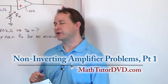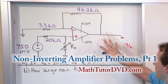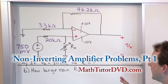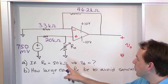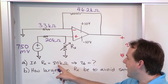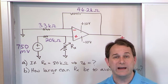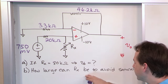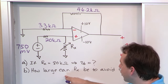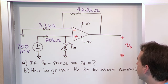Hello, welcome back to this lesson in engineering circuit analysis. We're talking about op amps, specifically non-inverting op amps. This is our first non-inverting op amp problem. There are two parts: first, we have an adjustable resistor R sub X set to 80 kilohms, and the question is what is the output voltage. Second, we'll determine how large this resistor can be to avoid saturation.